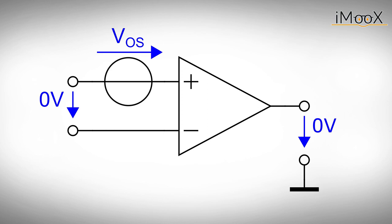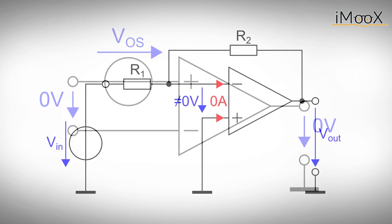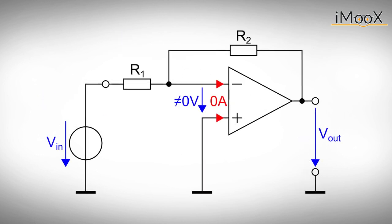Instead of analyzing the real operational amplifier with its offset voltage, we use an ideal one and add a voltage source to either the inverting or non-inverting input to represent the offset voltage. From now on, all we have to do is to apply the superposition principle, just as we did for some of the other circuits.